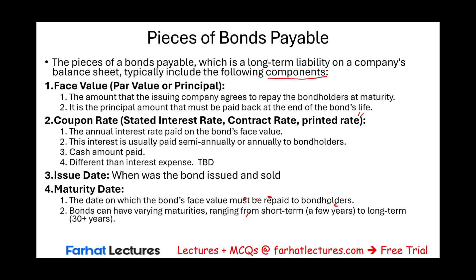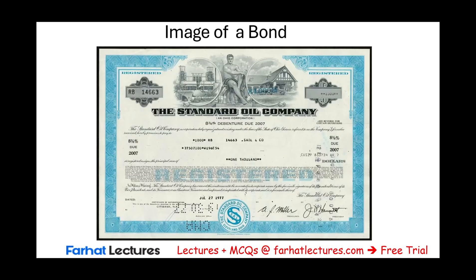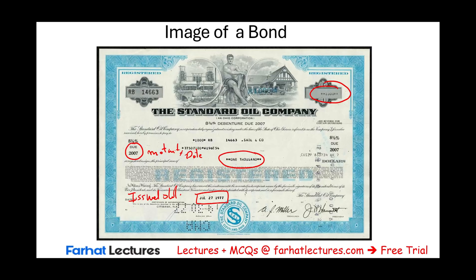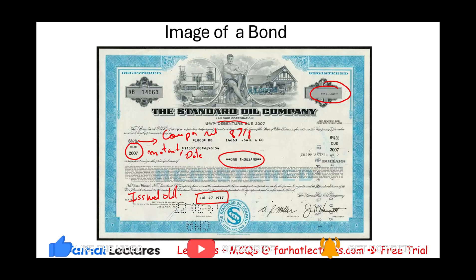Those are the major components of bonds payable. Now let's look at an actual bond. For example, this bond is due — this is the maturity date — and July 27, 1977 is the issue date. This is one single bond because bonds come in $1,000 denominations. The stated coupon rate is eight and three-eighths percent, issued by the Standard Oil Company, an Ohio corporation — an 8 and 3/8 percent bond due in 2007.